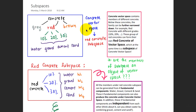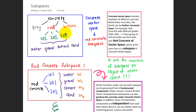In the previous lesson, we talked about the concrete vector space, which contains members of different concrete types. Below these concretes, the family can be further narrowed down. For example, red concrete with different grades — 10%, 20%, 30% — depends on the ratio of gravel, cement, water, and sand. This group of red concretes can form their own red concrete vector space, which is at the same time a subspace of the concrete vector space.